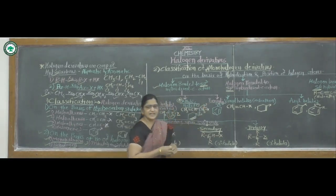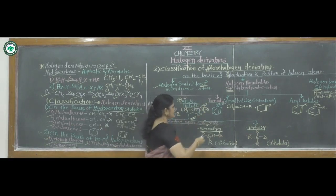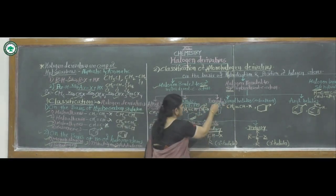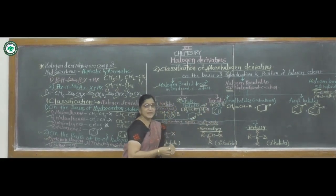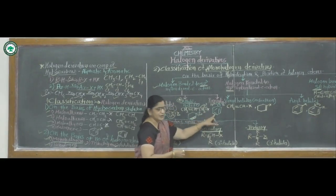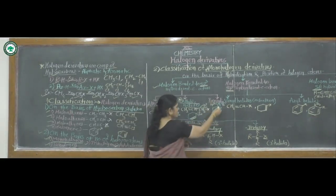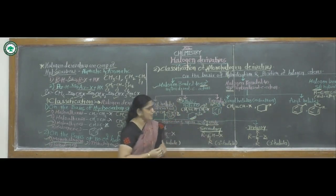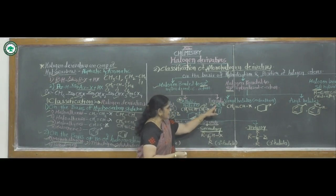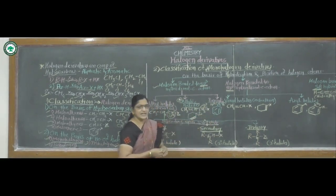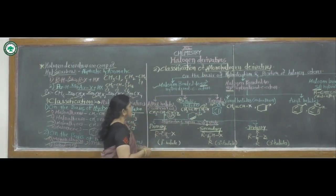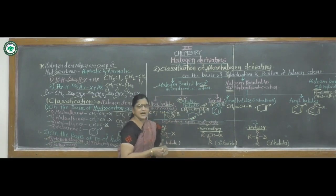The third subtype is benzylic halides. In benzylic halides, the halogen atom is bonded to an sp3 hybridized carbon atom, but that carbon atom is attached to a benzene nucleus or aromatic compound. When a benzene group is attached to the sp3 carbon bearing the halogen, such compounds are called benzylic halides.